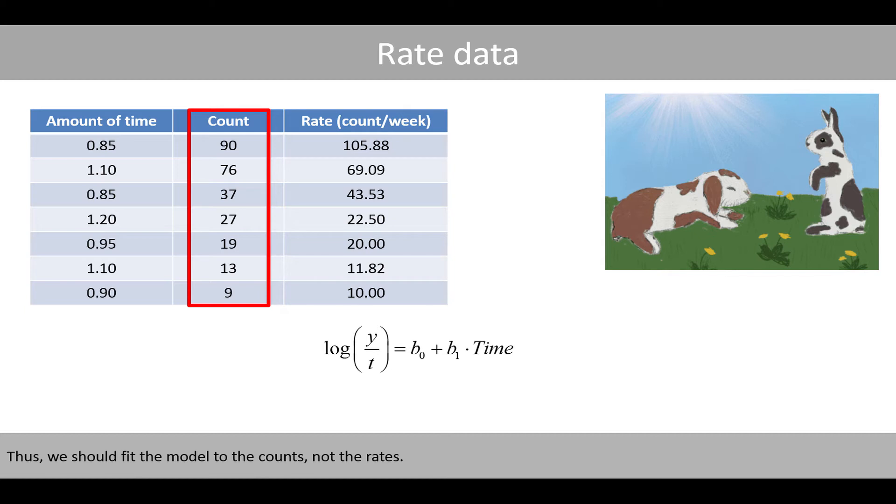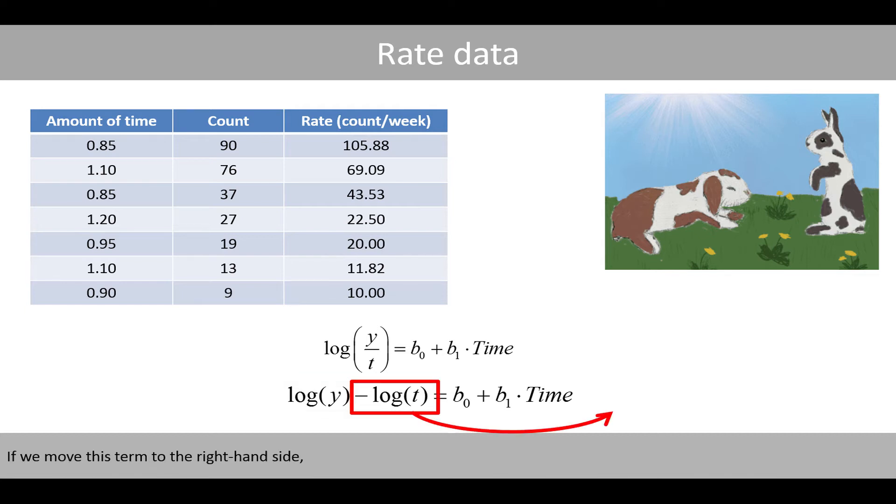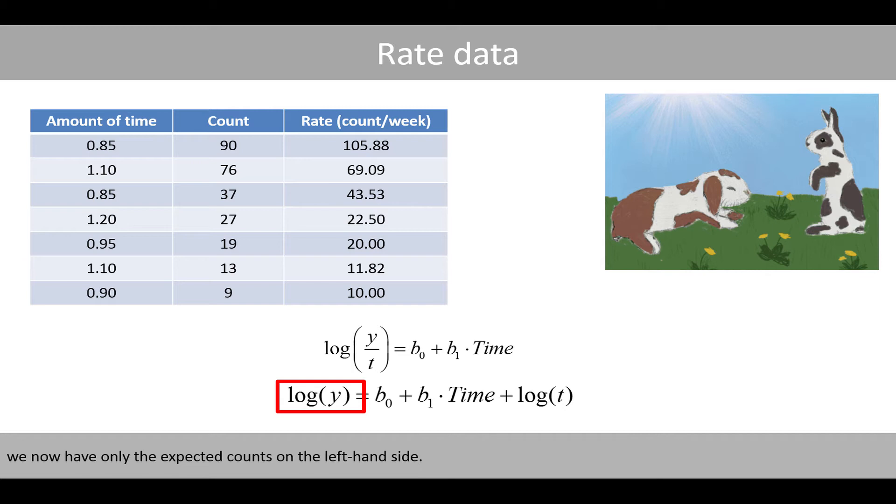Thus, we should fit the model to the counts, not the rates. By using the logarithmic laws, we can rewrite the left-hand side of the equation to the log of y minus the log of t. If we move this term to the right-hand side, we now have only the expected counts on the left-hand side.